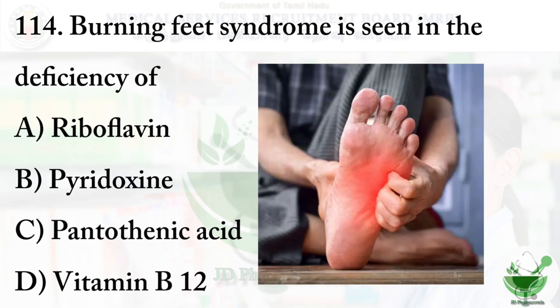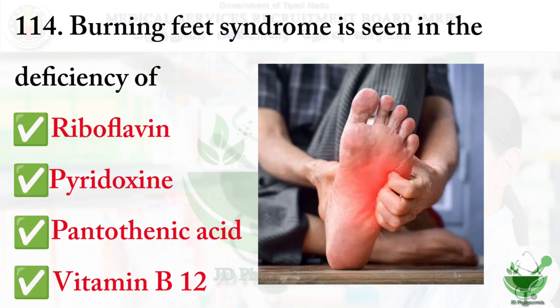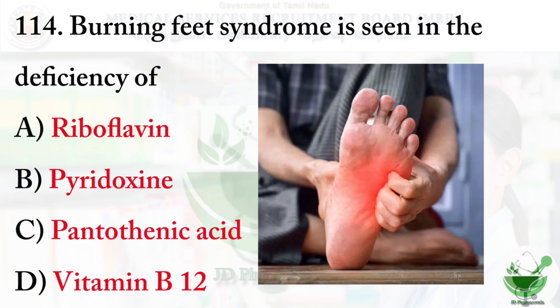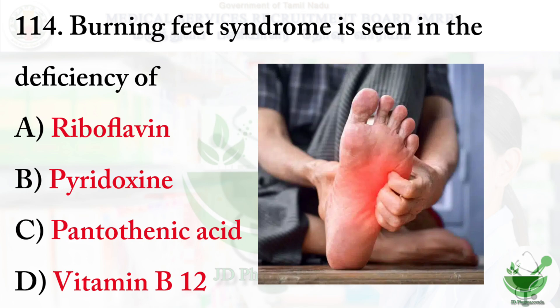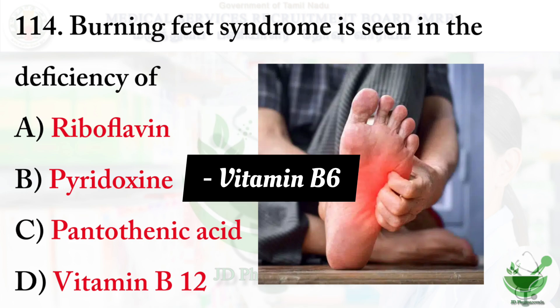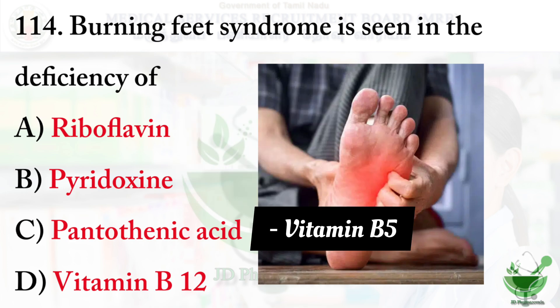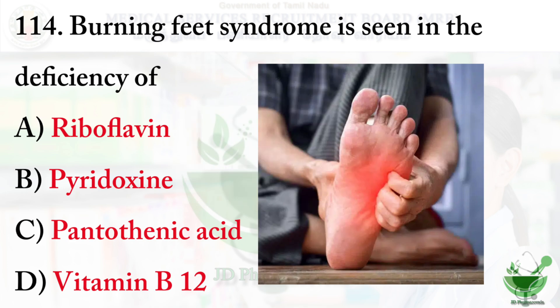Question 114: Burning feet syndrome is seen in the deficiency of — Option A: riboflavin (vitamin B2). Option B: pyridoxine (vitamin B6). Option C: pantothenic acid (vitamin B5). Option D: vitamin B12. The right option is option C, pantothenic acid.